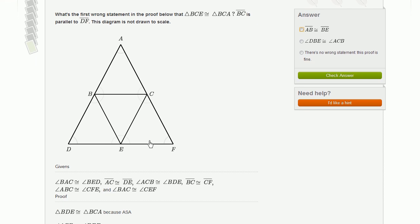Let's look at the givens. They tell us that angle BAC is congruent to angle BED. AC is congruent to DE. Angle ACB congruent to angle BDE. BC is congruent to CF. Just double click there to get the two slashes.